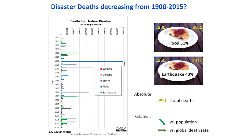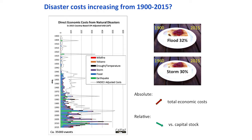If we focus just on disaster deaths from a few main disaster types, flood has the highest piece of the pie from 1900 through 2015, with over 51% of deaths. From 1960 to 2015, however, earthquake is the highest. Relative to global population, disaster deaths are actually decreasing, but compared to the global death rate, it's about constant. When we switch to disaster costs, flood still has the highest piece of the pie from 1900 through 2015, but from 1960 onwards, storm, earthquake and flood have about the same amount.